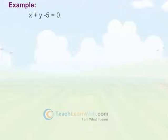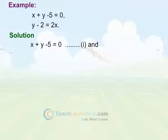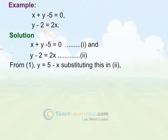Example: Solve X plus Y minus 5 equals to 0. Y minus 2 equals to 2X. Given equations are X plus Y minus 5 equals to 0 and Y minus 2 equals to 2X. From 1, we get Y equals to 5 minus X.